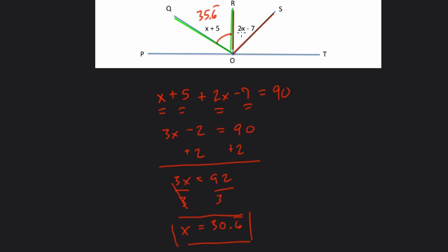Here, we have 2 times 30.6 minus 7. So I think of 30 and 2 thirds. I don't like to work with 0.6 repeating. I'm going to double this, so that's going to give me 60 and 4 thirds. Now 4 thirds is 1 and 1 third, so this is 61 and 1 third. Minus 7.